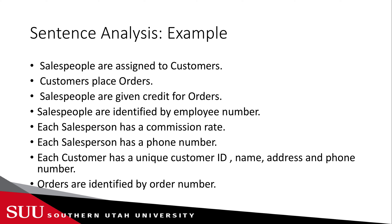Based on those sentences, we extract entities, attributes, and relationships. We look for subjects and objects because these model our entities, verb phrases become our relationships, and a single-valued fact about an entity is an attribute. The subjects and objects here are salespeople, customers, and orders. 'Assigned to' in the first sentence is a relationship, and 'place' in the second sentence is another relationship.